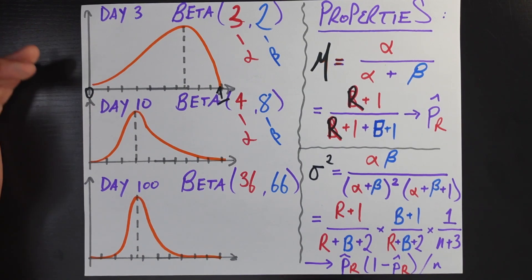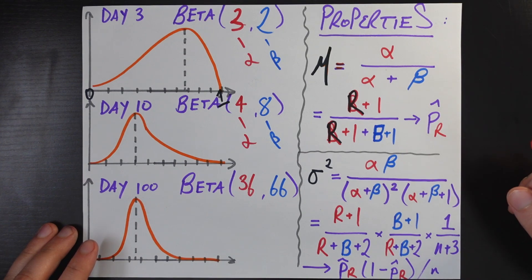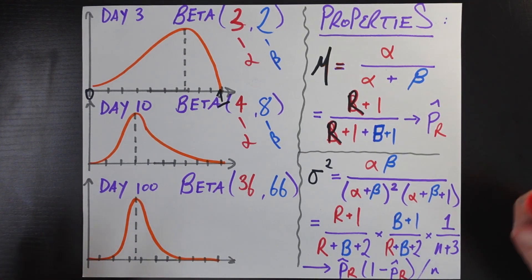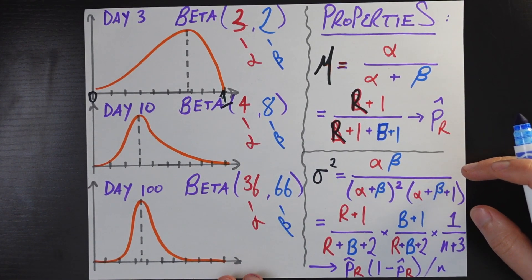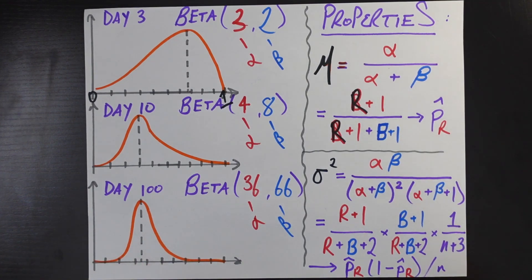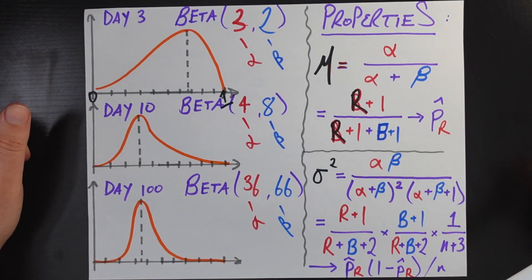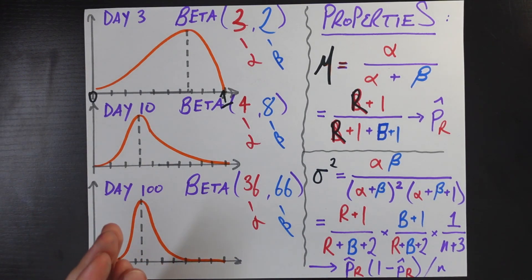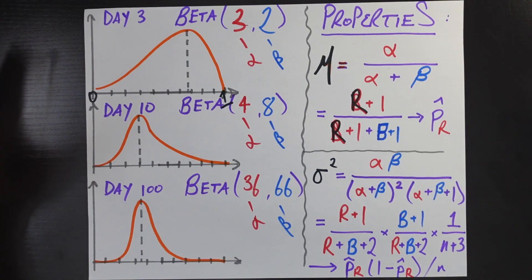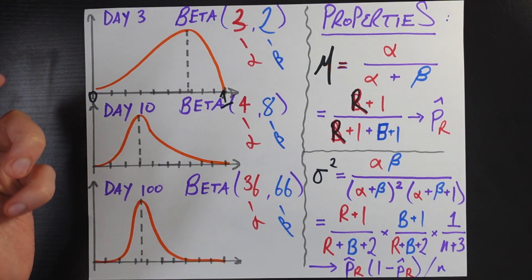Now let's say it's the last day of the course — day 100. You aced your final exam and the professor wore red shoes 35 times, so alpha is 36, and blue shoes 65 times, so beta is 66. We have an even tighter distribution. The mode is again the sample proportion of 0.35, and the standard deviation has gotten even tighter than after 10 days. If there were 1000 days in the course or more, it would just get tighter and tighter. The beta distribution seems to hit all the intuitive conditions we'd require out of a distribution trying to measure probabilities themselves.